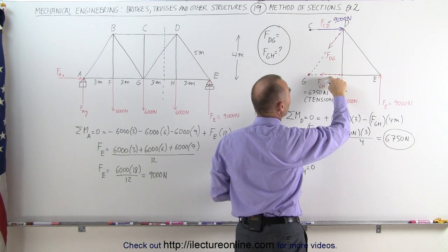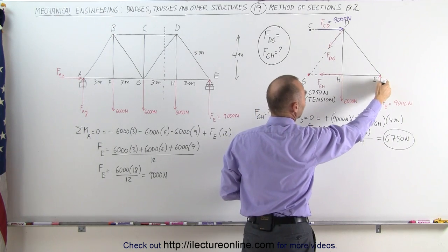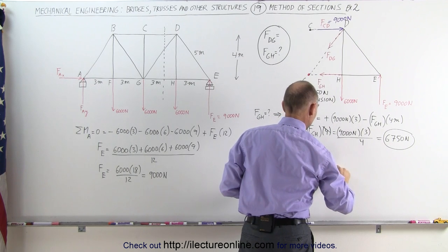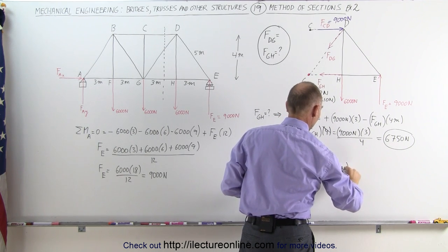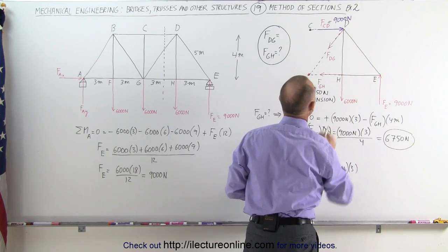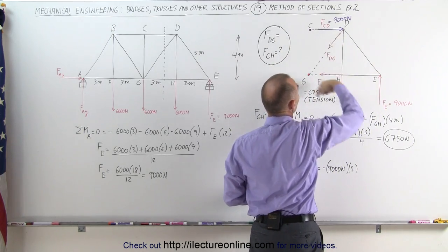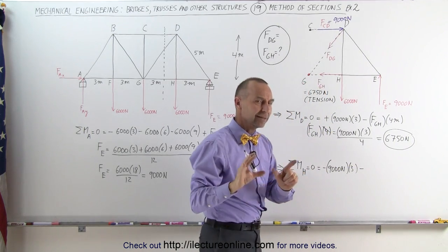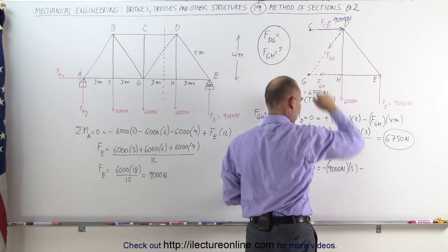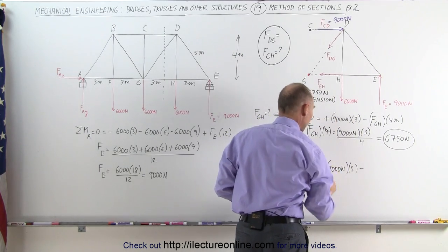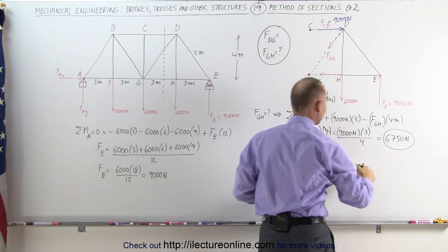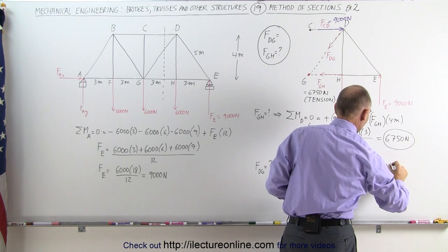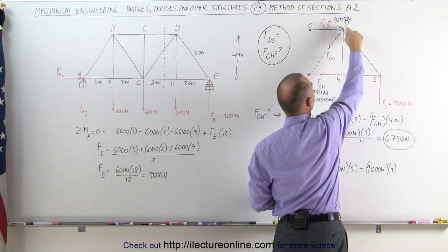Notice at H I can ignore FGH. I can ignore the 6,000 Newtons force. But I can't ignore this force right here. This gives us a counterclockwise motion that's equal to minus 9,000 Newtons times the distance of 3 meters from there to there. We have this force right here which causes a clockwise motion. Since it's counterclockwise it's a positive 9,000, but this one is negative because it's clockwise. So negative 9,000 Newtons times the distance of 4 meters because the distance from there to there is 4 meters.